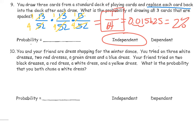So it's a 1 out of 64, or a 2% chance of happening. It's independent because you put the card back each time. The last example: you and your friend are dress shopping for the winter dance. You tried on three white dresses, two red dresses, a green dress, and a blue dress. Your friend tried on two black dresses, a red dress, a white dress, and a yellow dress. What is the probability that you both choose a white dress? This is independent because you each tried on separate dresses — each event is completely separate.